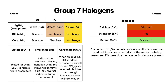Then you've got the cation tests — the main thing here is the flame test. Calcium (Ca²⁺) will produce a brick red flame, strontium will produce a red flame, and barium will produce pale green. Then for ammonium: ammonia gas is given off, which is a base. Hold red litmus paper over a petri dish of the substance being tested, and if it turns blue, then ammonium ions are present.